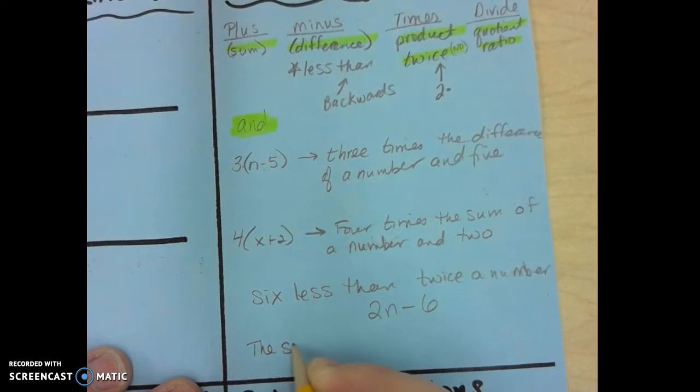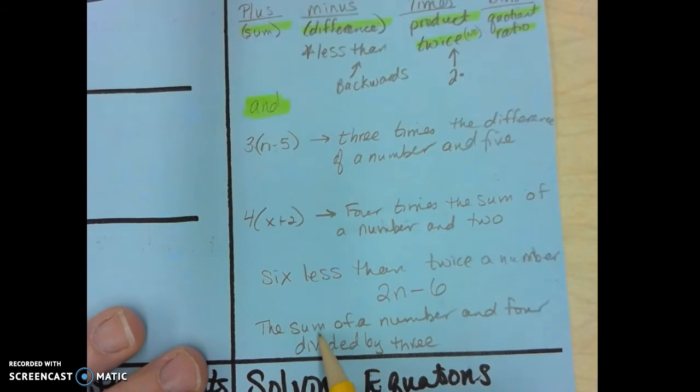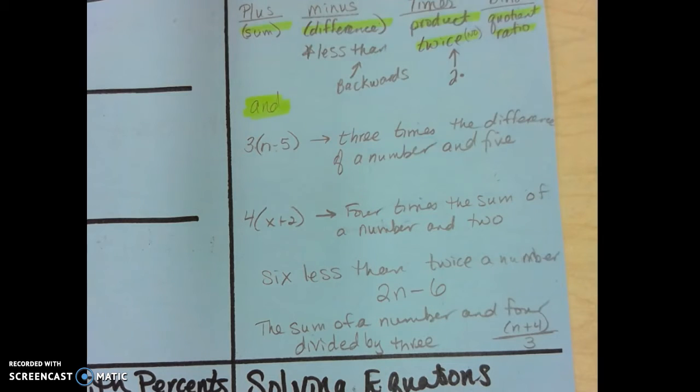And then the last one, the sum of a number and four divided by three. So I start here and it says the sum of a number and four, so the sum of a number and four divided by, so that means that whole thing divided by three.